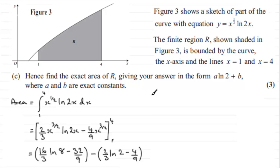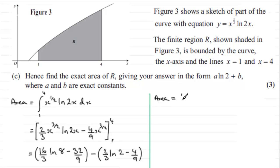So the area equals these terms combined. We need to express it in the form involving natural log of 2. Since 8 is the same as 2 cubed, we have the natural log of 2 cubed. That gives us 16/3 multiplied by the natural log of 2 cubed, then minus 2/3 natural log of 2. For the constant terms: minus 32/9 minus minus 4/9 gives minus 32/9 plus 4/9, which is minus 28/9.